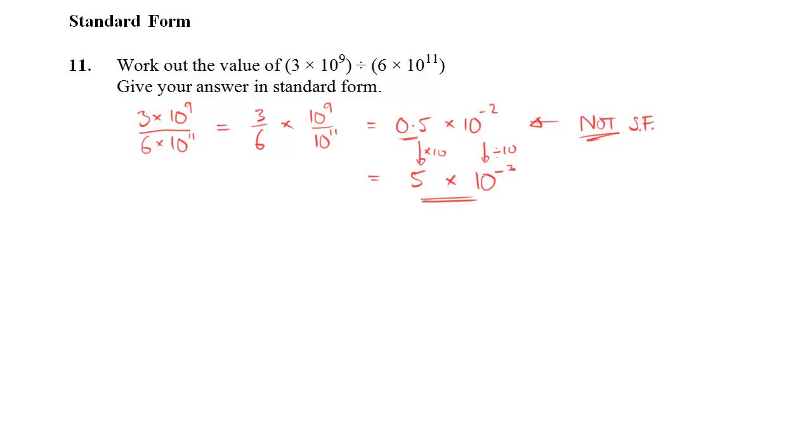So that means decreasing the power of 10 by 1. So from minus 2, we go to minus 3. So the answer, 5 times 10 to the minus 3.